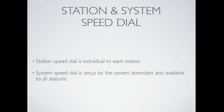The LIK features both station and system speed dial. Station speed dial is individual to your station or extension, while system speed dial is set up by the system attendant and available to everybody in the company.